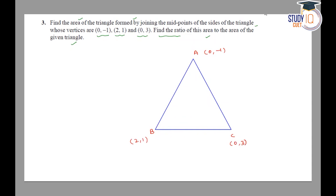Now, we are given that we have to form another triangle whose coordinates are the midpoints of AB, BC, and AC. So, AB has midpoint P, BC has midpoint Q, and AC has midpoint R.